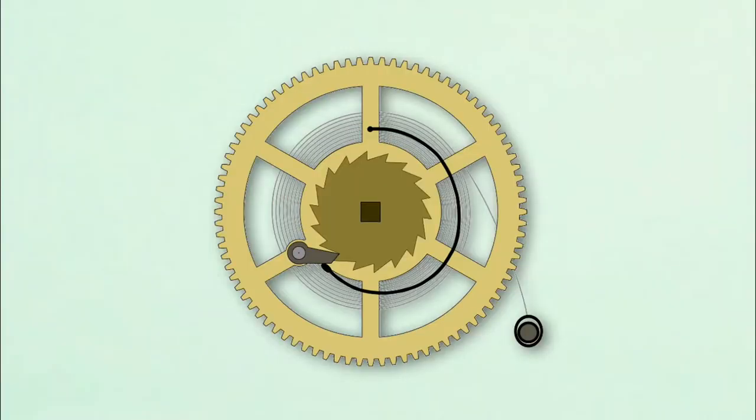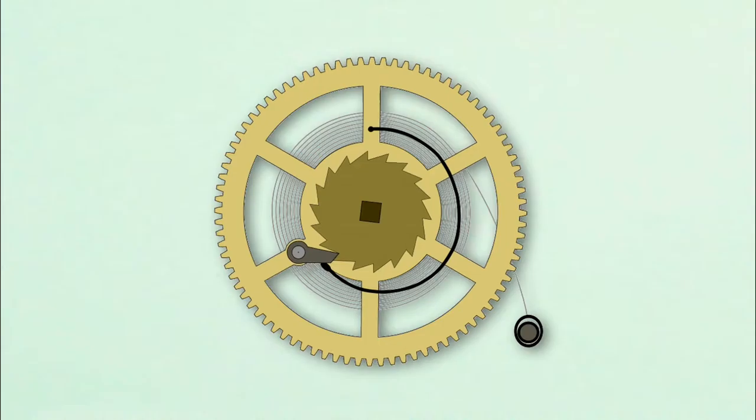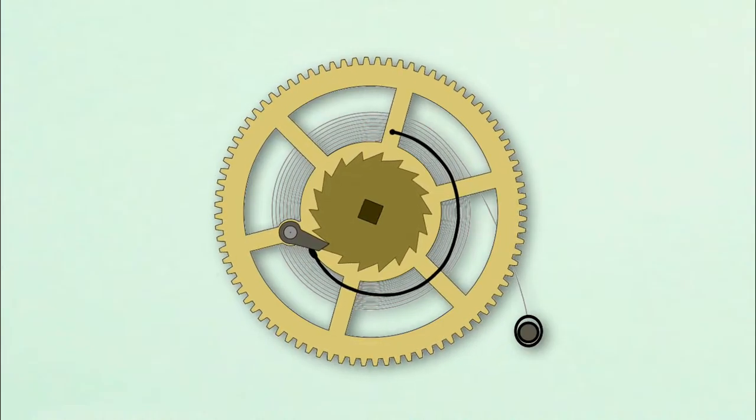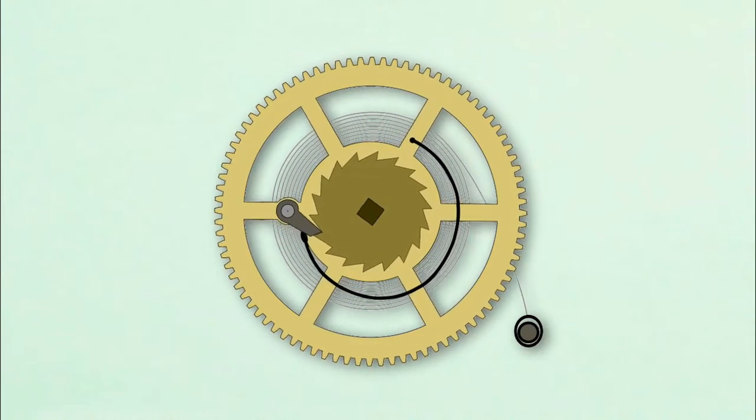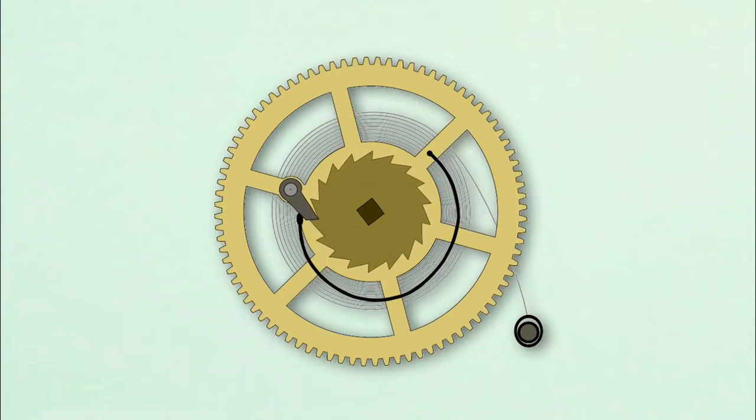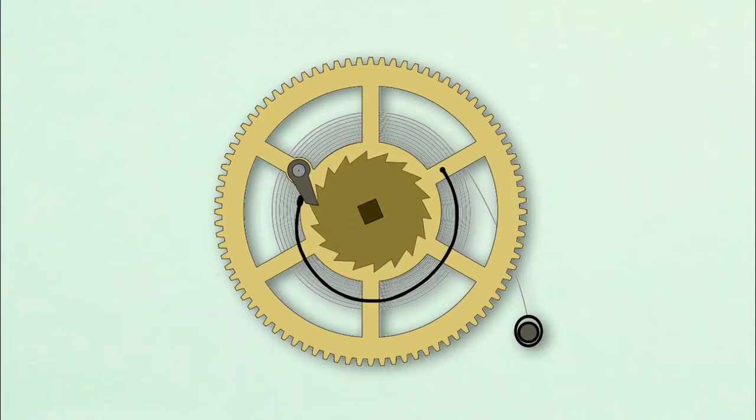We wind the mainspring by turning the winding arbor in the opposite direction of its normal rotation. This causes the click to slip over the ratchet wheel teeth, making the distinctive clicking sound as the click is alternately lifted and dropped into the ratchet teeth. During winding, the great wheel is held in place by the rest of the wheel train as the winding arbor rotates backwards to wind the spring.